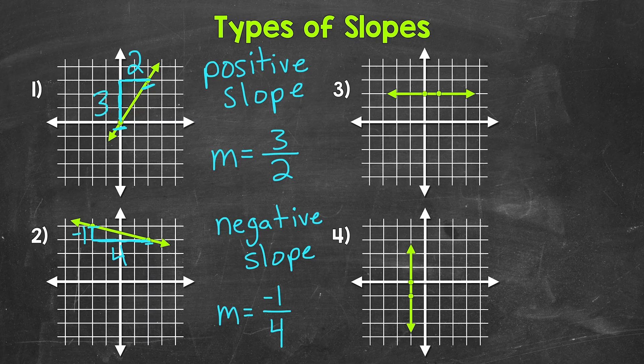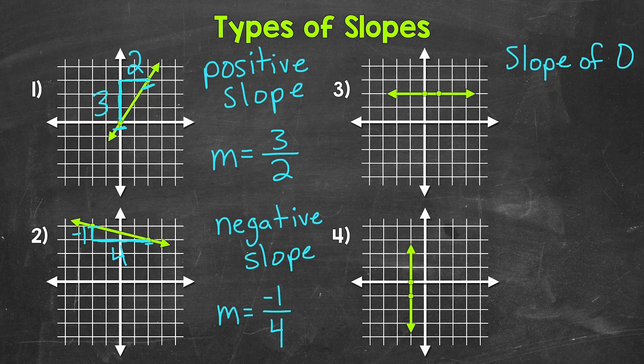Let's move on to number three, where we have a horizontal line. So there's no vertical change here at all. The line isn't moving upward or downward, just straight across. The Y values stay the same as the X values increase. This is an example of a slope of zero.